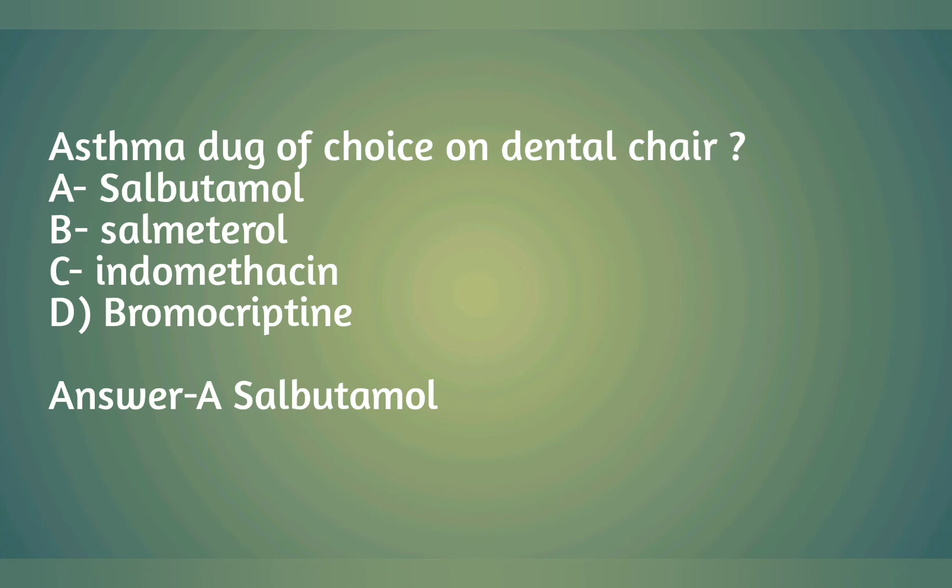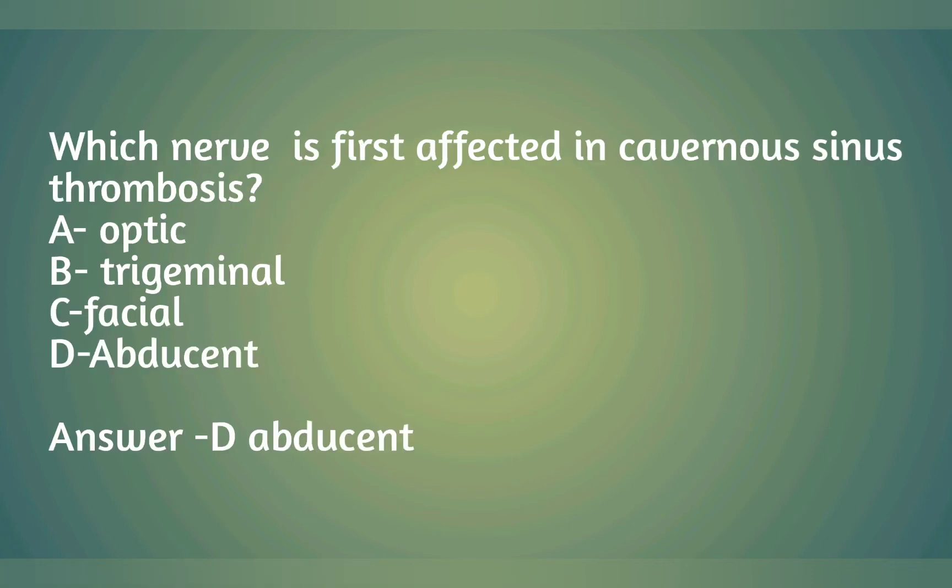Asthma drug of choice on dental chair: A) salbutamol, B) salmeterol, C) indomethacin, D) bromocriptine. Answer: A) salbutamol. Which nerve was first affected in cavernous sinus thrombosis? A) optic, B) trigeminal, C) facial, D) abducent. Answer: D) abducent.